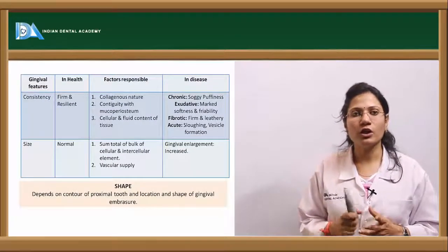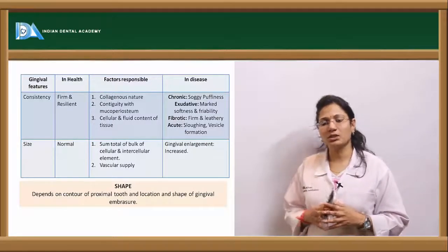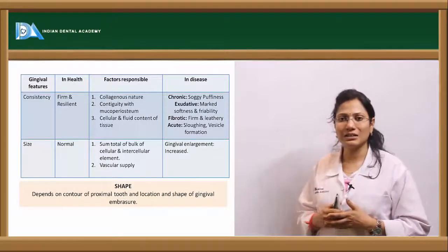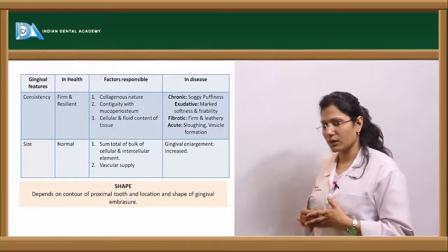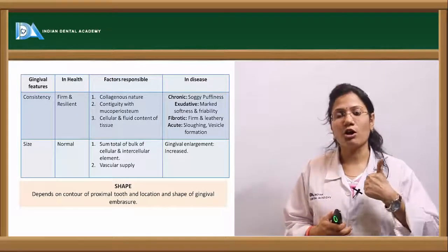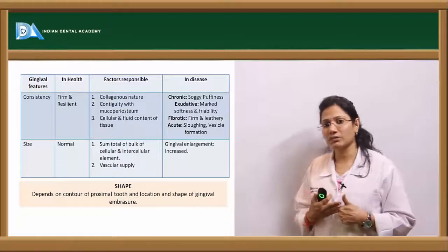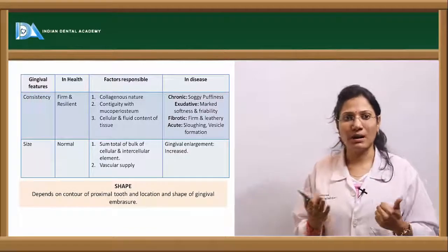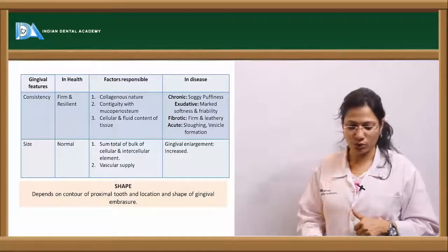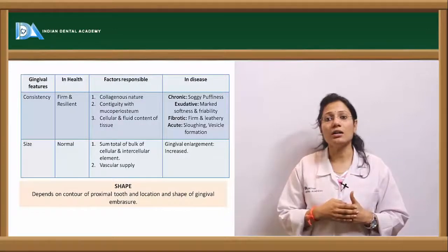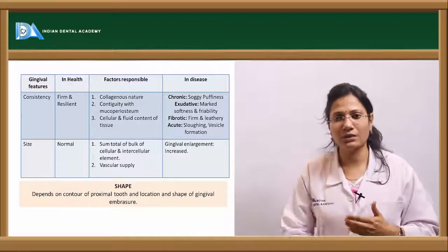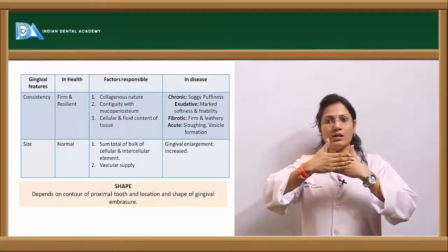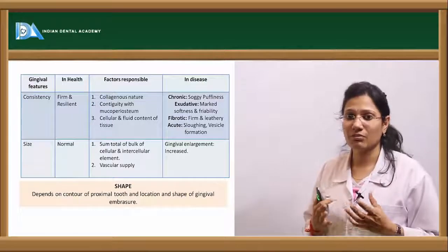Now let's talk about the consistency of your gingiva. In normal conditions, the consistency of the gingiva is firm and resilient. There are three reasons for this: first, the collagenous nature of the underlying gingival connective tissue — mostly composed of type 1 and type 3 collagen fibers arranged in bundles. Second, the contiguity with the mucoperiosteum — your attached gingiva is continuous with the underlying periosteum of the alveolar bone.